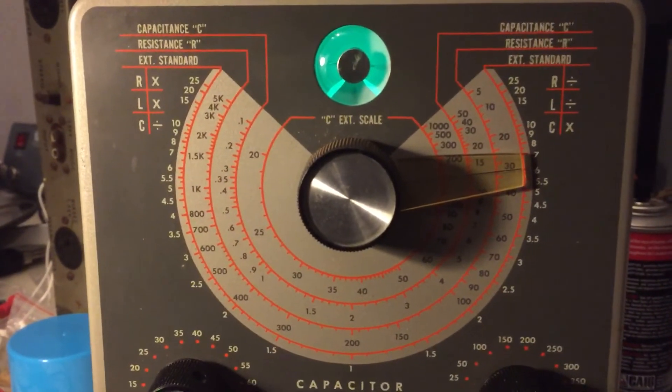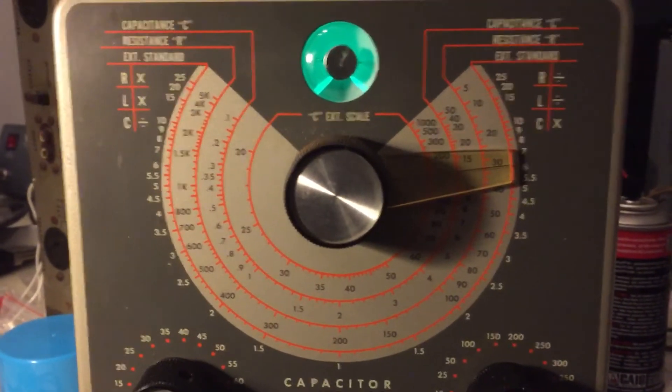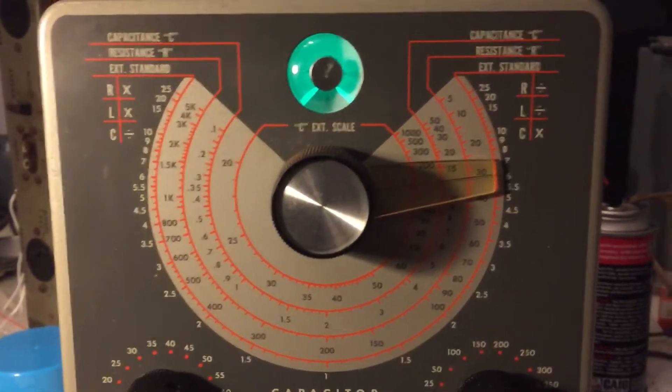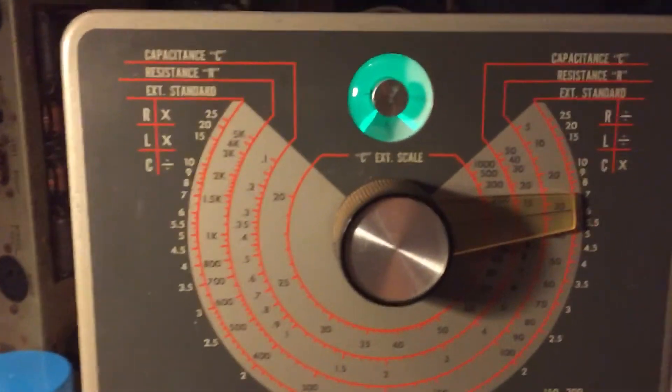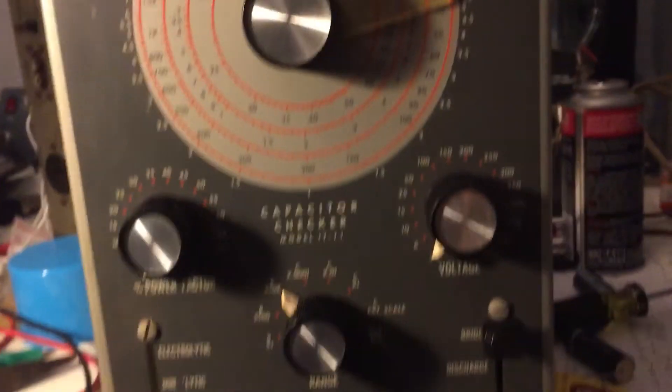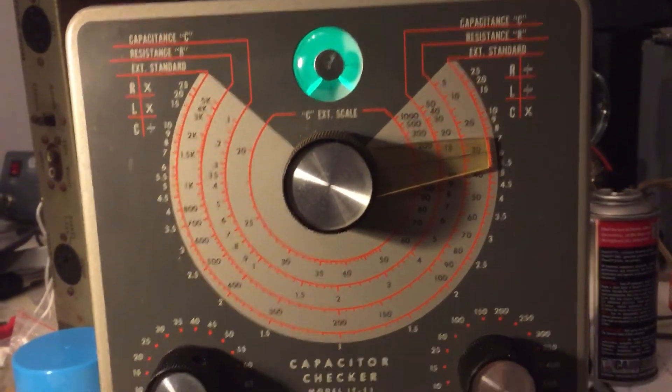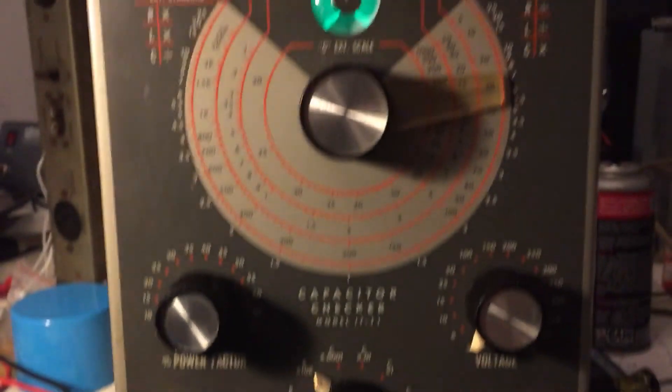I generally wouldn't use this unit for resistance measurements. I have more effective units like modern multimeters or even my IM11 VTVM, but it is interesting to see how it uses a balanced bridge in order to find the resistance given a known reference or an external reference value.